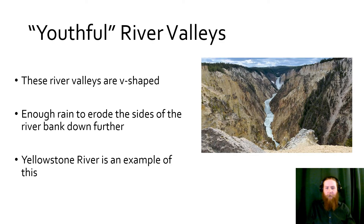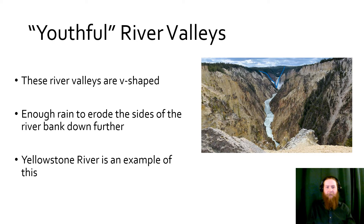Youthful or young river valleys are the ones that are more V-shaped. There's enough rain for some erosion, but not a lot on the sides. This picture is from the Yellowstone River — the little big canyon of the Yellowstone. It's a very young river comparatively to the Grand Canyon and still has very distinct V-shaped valleys. Remember: rivers are V-shaped. We'll talk about the difference between V-shaped and U-shaped valleys when we get to glaciers.